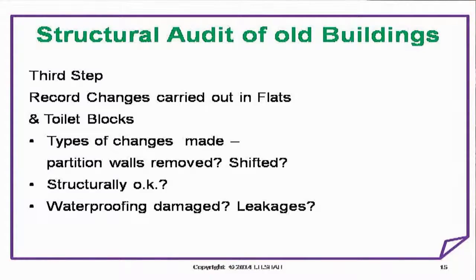Third step: record changes carried out in the flats and toilet blocks. Type of changes made — partition walls removed or shifted, whether structurally okay, waterproofing damage, and leakages.